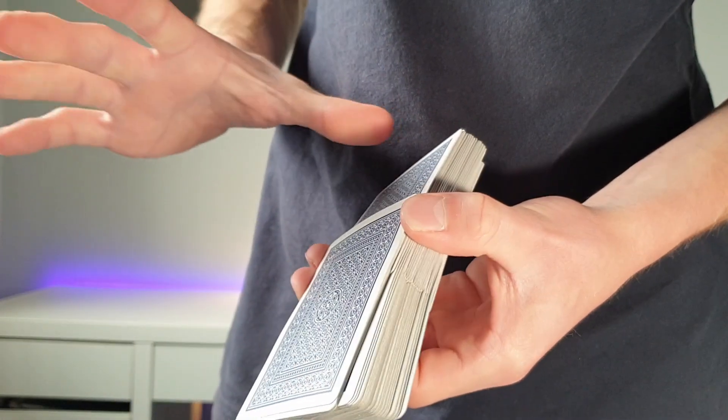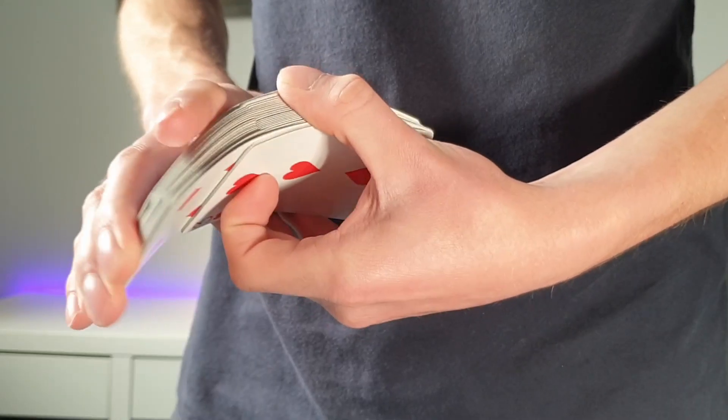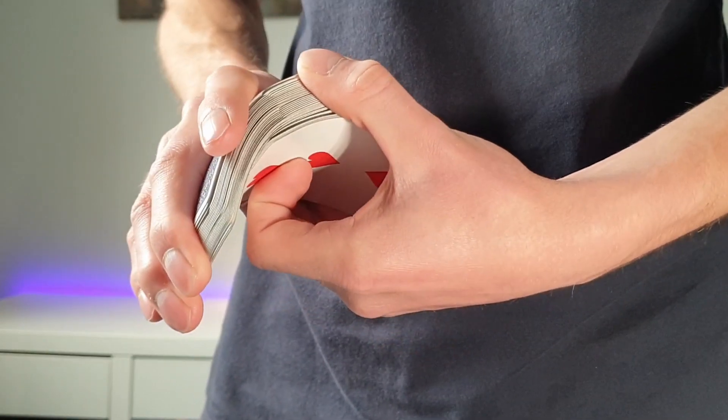We're going to apply pressure using our thumb and our middle and ring finger this time. And squeezing in just like we do with the Riffle Shuffle, we're going to create this sort of bridge that we're going to hold with our right hand.